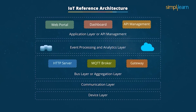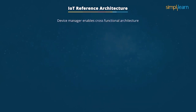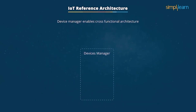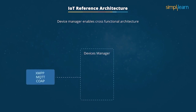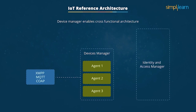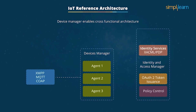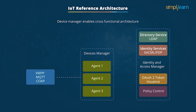The comprehensive IoT reference architecture includes various components, rule engines, interfaces, and security systems. Cross-functional architecture is possible using a Device Manager that provides a single platform for remote management and communicates with devices through set protocols. The identity layer has cybersecurity capabilities including policy control and OAuth 2.0 token instruments, identity services, XACML, PDP, and Directory of Users such as LDAP.